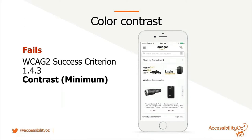This is an example from Amazon. What do you do when you go to Amazon? You're looking to search. The search bar has grey text on a white background, which is very difficult to read and fails WCAG 2 success criterion 1.4.3: Contrast Minimum.